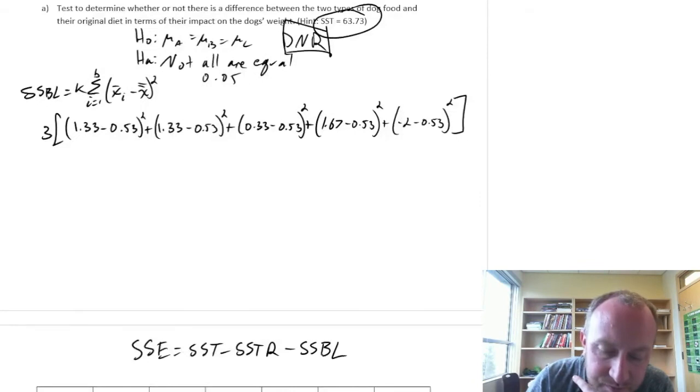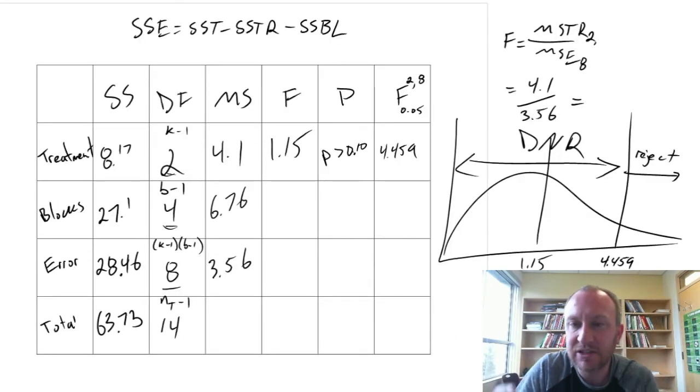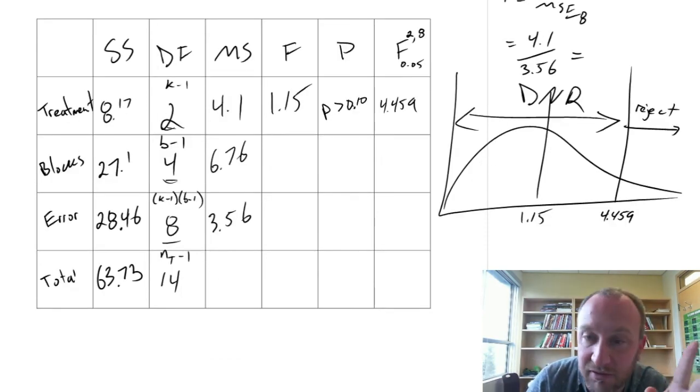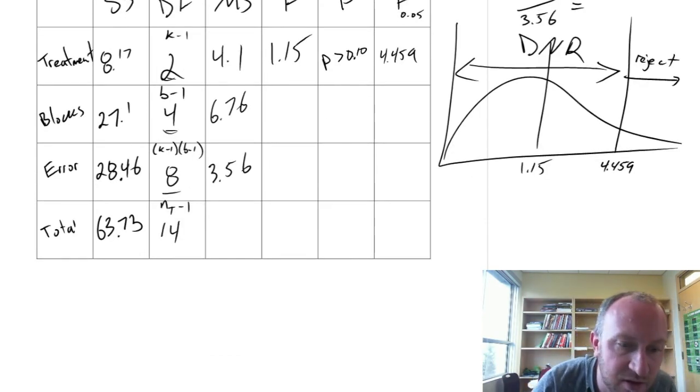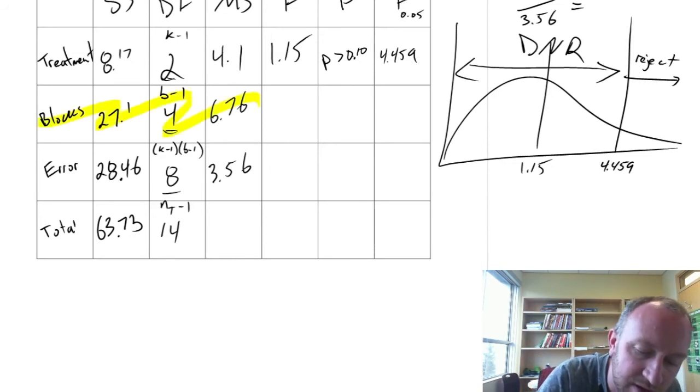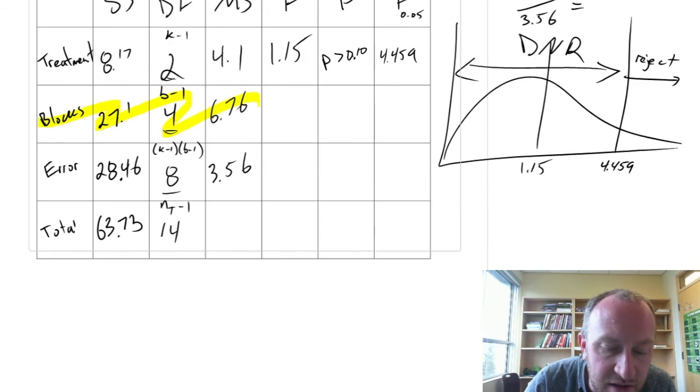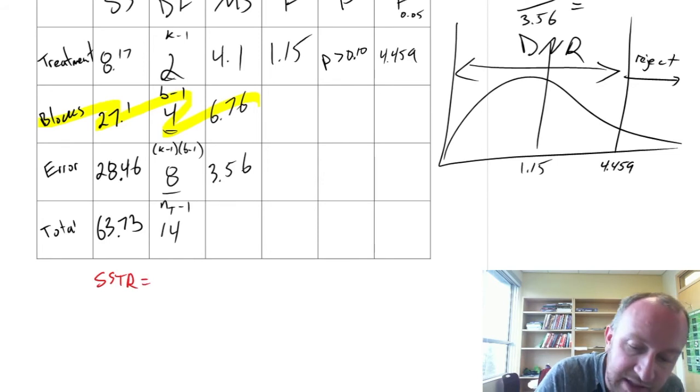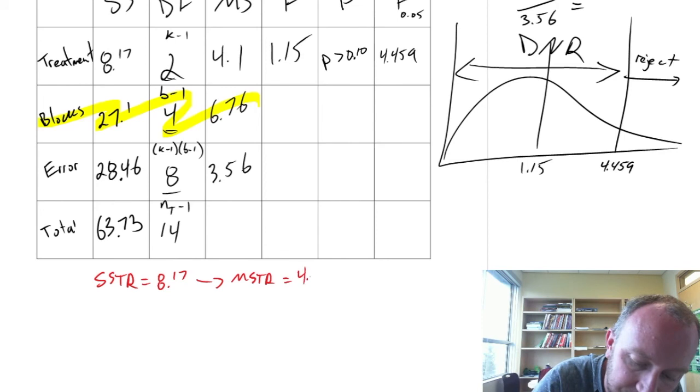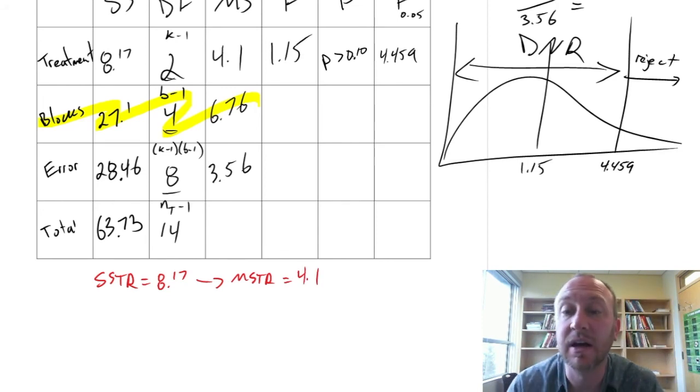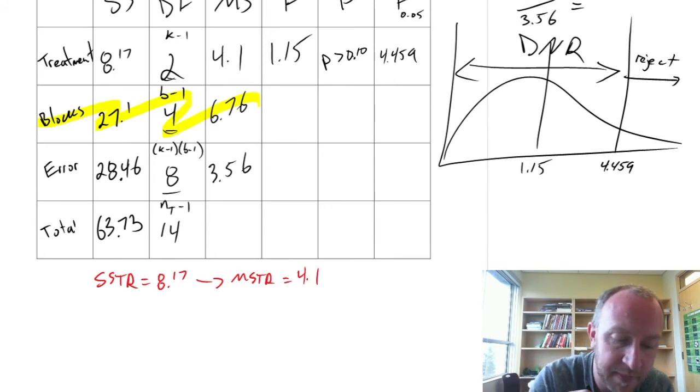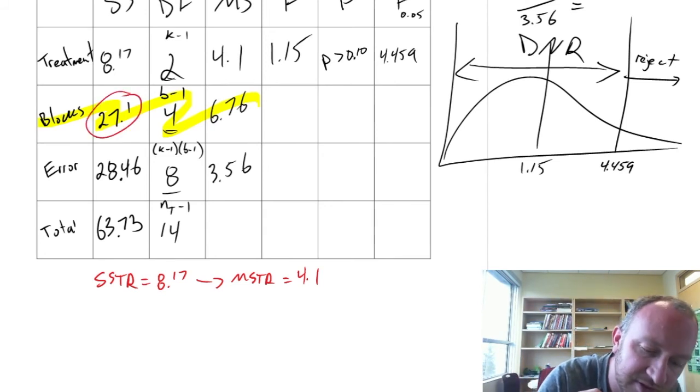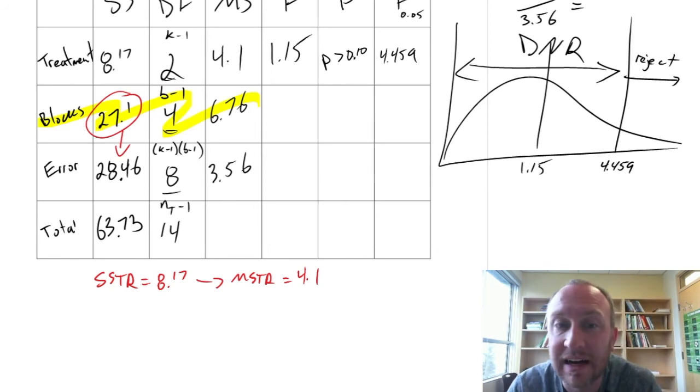So if we come down here to our ANOVA. Had we treated this as a purely randomized design. We wouldn't have had this whole row on blocks. This row would not have been here. And the result would have been an SSTR that is still equal to 8.17. And an MSTR that is still equal to 4.1. That part, that would not have changed one bit.